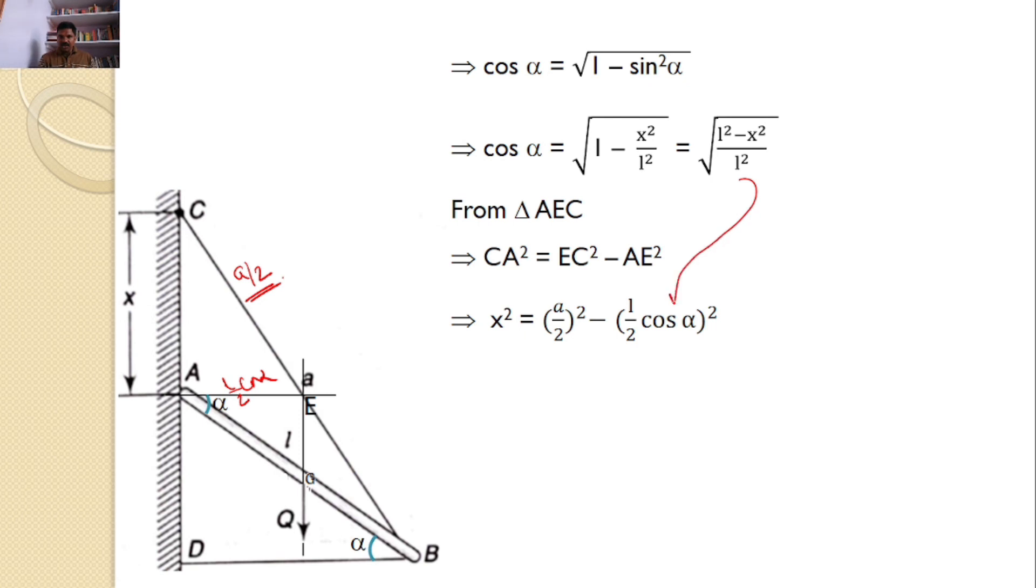And cos alpha, you know, this value is equal to this much. Hence, I can say a square by 4 minus L square by 4 into L square minus x square by L square. I can further simplify this. And upon simplification further, x square is equal to a square by 4 minus L square by 4 plus x square by 4.